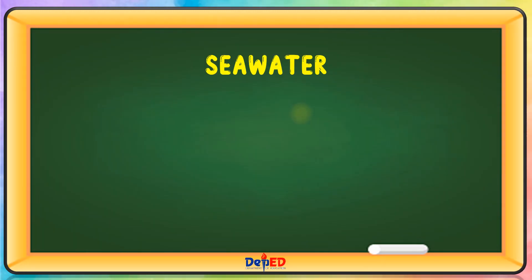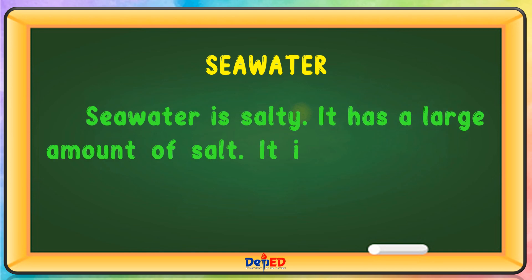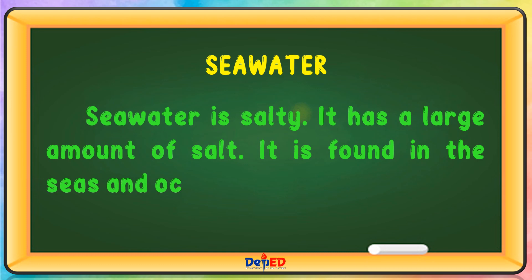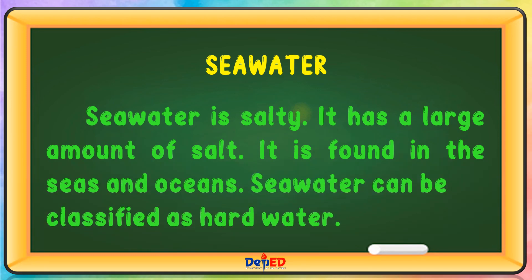Sea water is salty. It has a large amount of salt. It is found in the seas and oceans. Sea water can be classified as hard water.